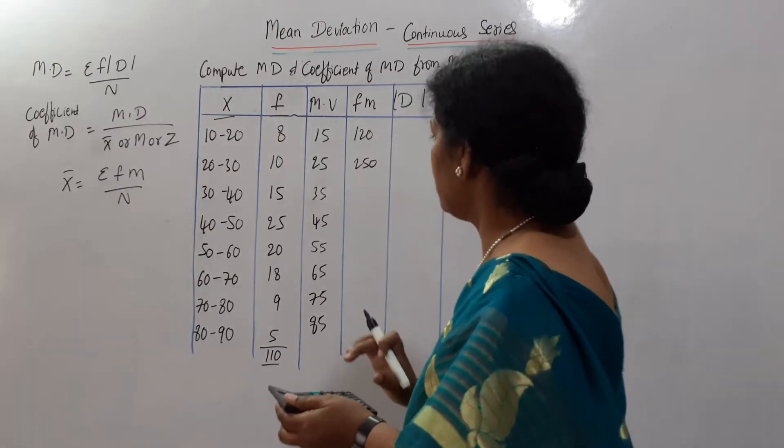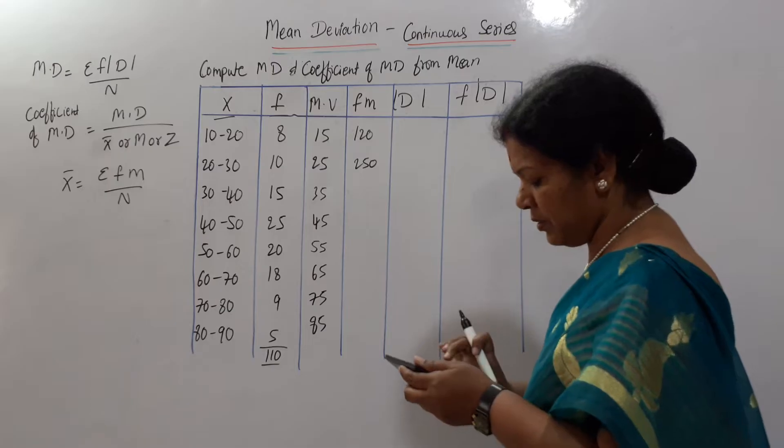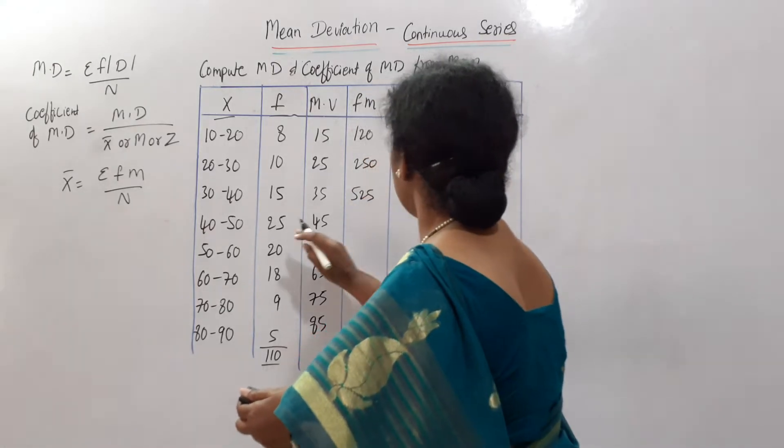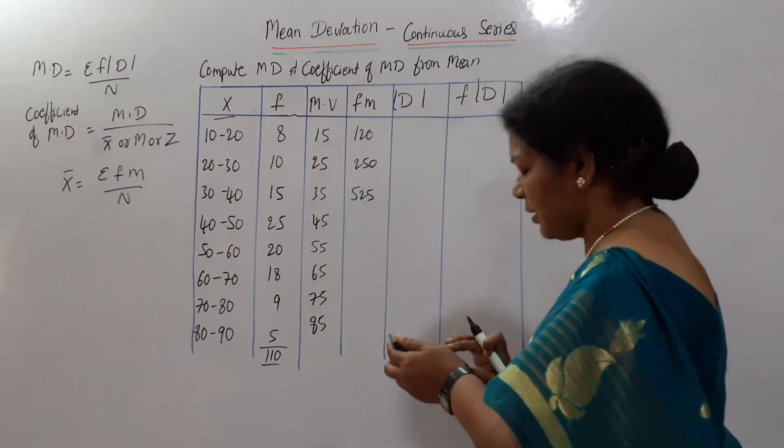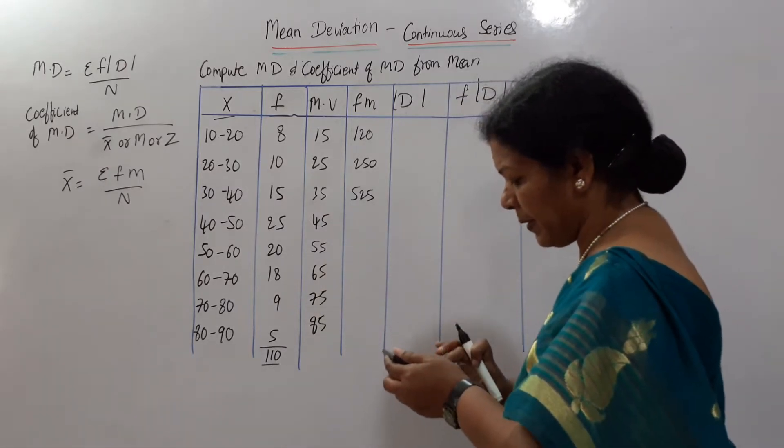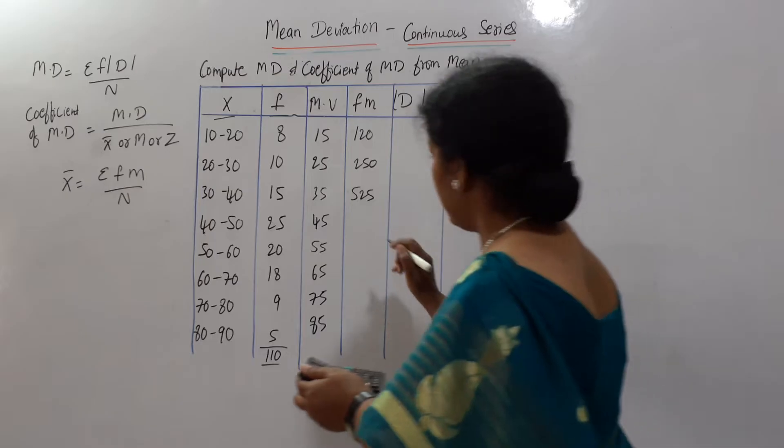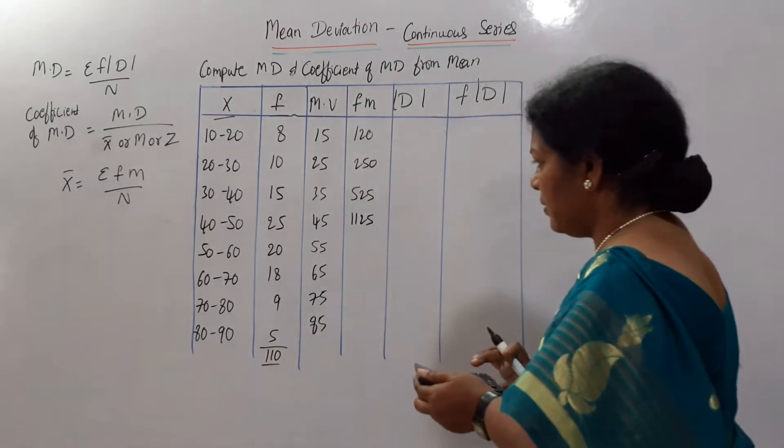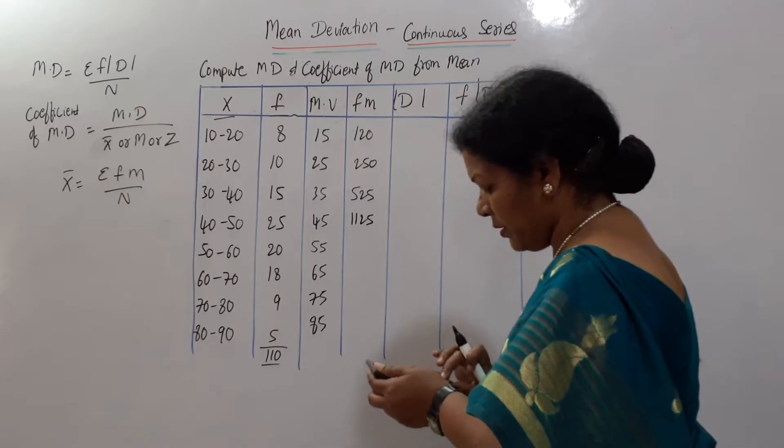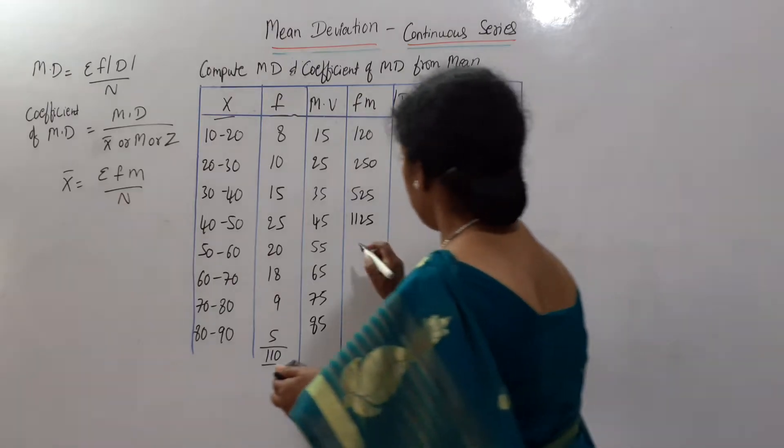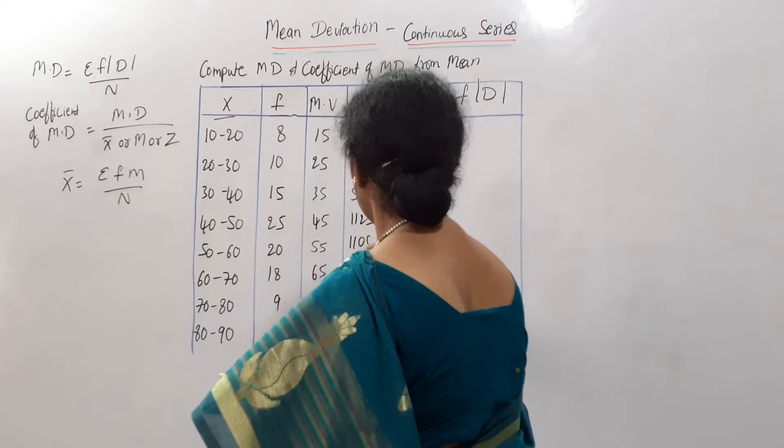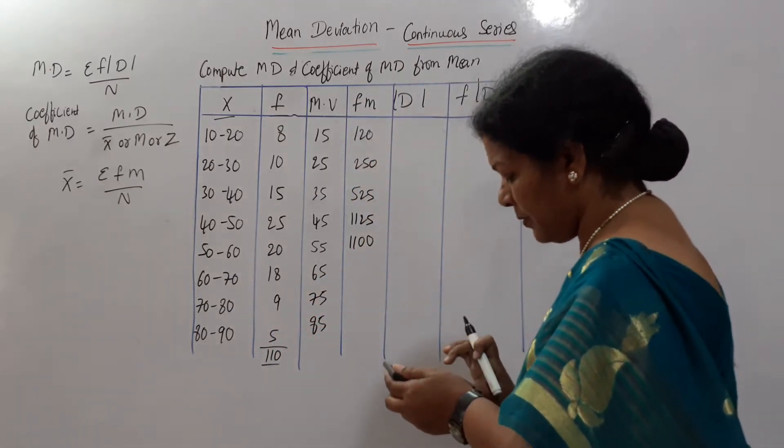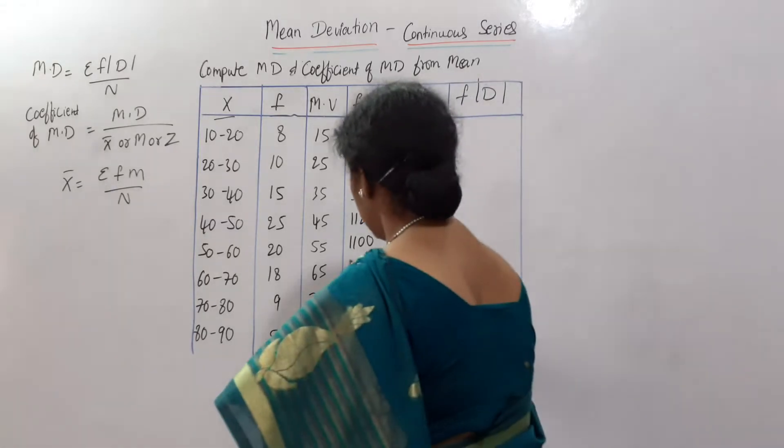Next 15 into 35, 525. Next 25 into 45, 1125. Next 20 into 55, 1100.